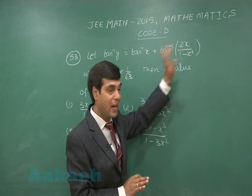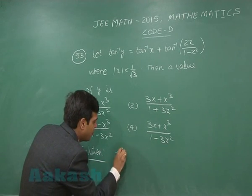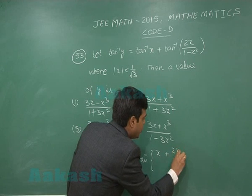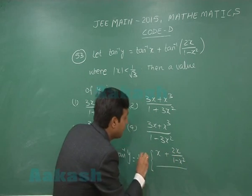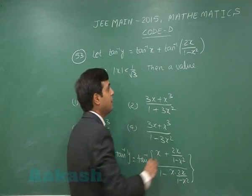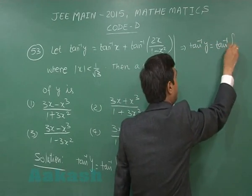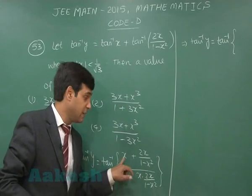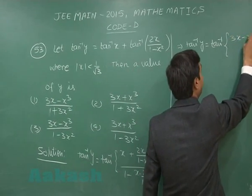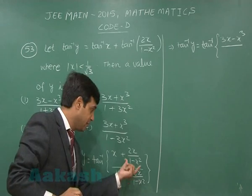Applying tan⁻¹(a) + tan⁻¹(b) = tan⁻¹((a+b)/(1−ab)), we get tan⁻¹(y) = tan⁻¹( (x + 2x/(1−x²)) / (1 − x·(2x/(1−x²))) ). Taking LCM in the numerator gives x − x³ + 2x = 3x − x³.